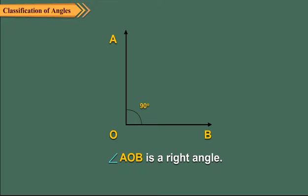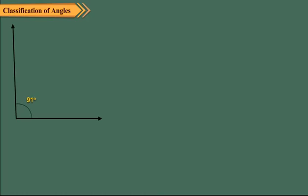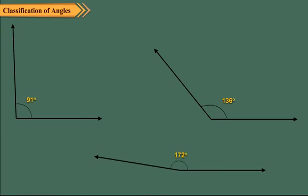An angle whose measure lies between 90 degrees and 180 degrees is called an obtuse angle. Here the angles measure 91 degrees, 136 degrees, and 172 degrees. So these are obtuse angles.